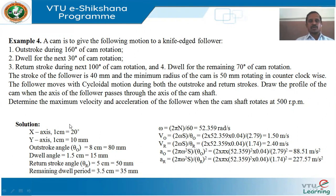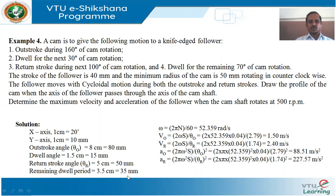Using this data, to construct the displacement diagram, the dimensions along the x-axis represent the angle of rotation of the cam in degrees. We should select a suitable scale. Here, along the x-axis 1 cm equals 20 degrees; along the y-axis 1 cm equals 10 mm. According to this scale, the outstroke angle becomes 8 cm (160/20 = 8 cm = 80 mm). The dwell angle becomes 1.5 cm (15 mm). The return stroke angle becomes 5 cm (50 mm). The remaining dwell period becomes 3.5 cm (35 mm).